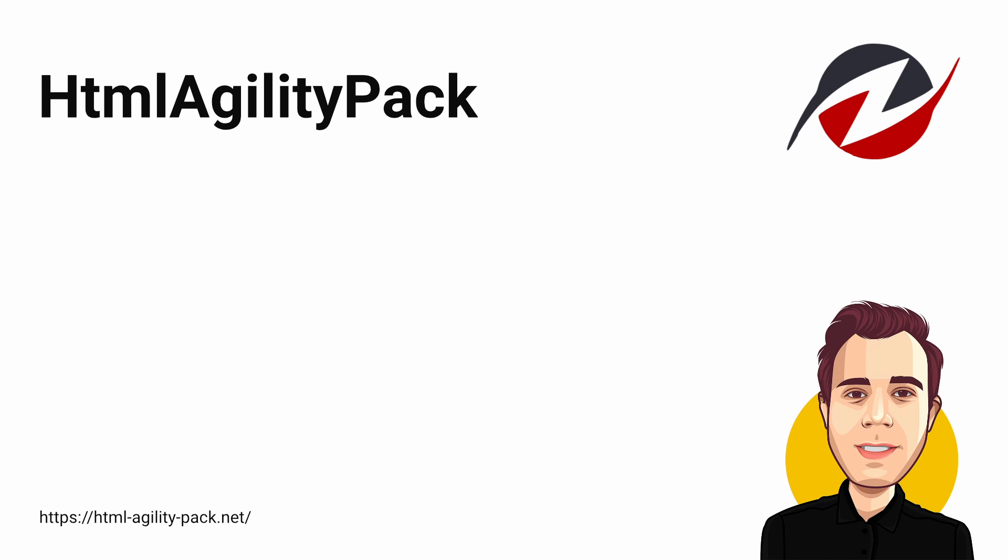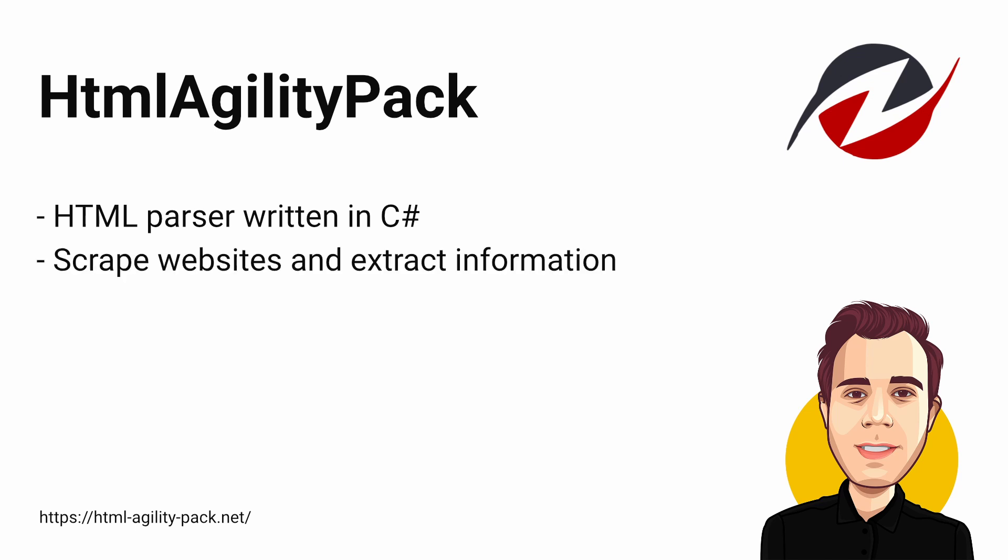HTML Agility Pack is an HTML parser written in C#. You can use it to scrape websites and extract information from their HTML pages. So far I have used it in a single project, but I've had great success with it. It took me a few hours to get used to XPath, but in the end it saved me hours of manual parsing.